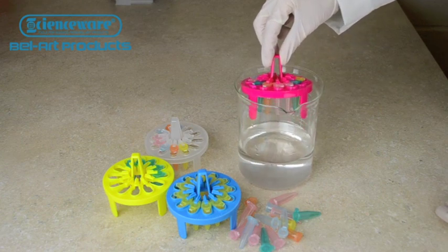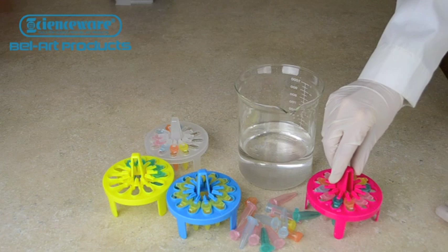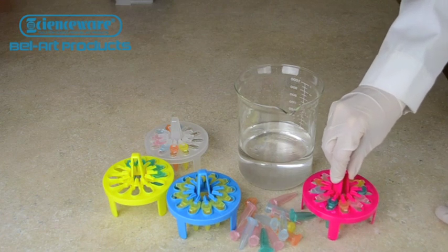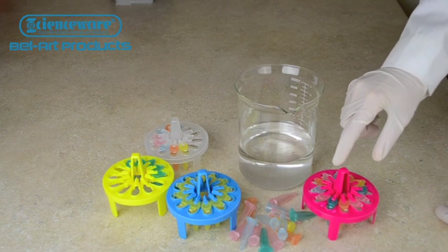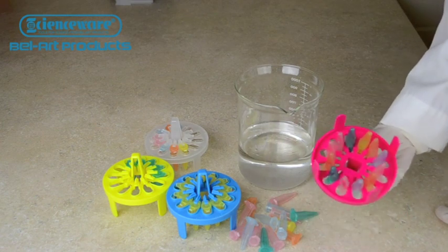A raised handle allows for easy lifting without agitating the samples, and stable feet keep racks upright on the bench no matter how many tubes are in the rack. But even if the rack did get knocked over or turned upside down, your samples would be safe.